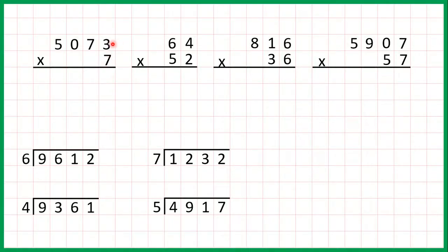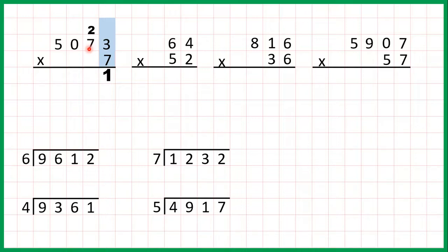First we have 5073 times 7. So we start by multiplying the digit furthest to the right. 3 times 7 is 21, which we need to write as 2, 1 with the first digit above the next digit that we're going to multiply.